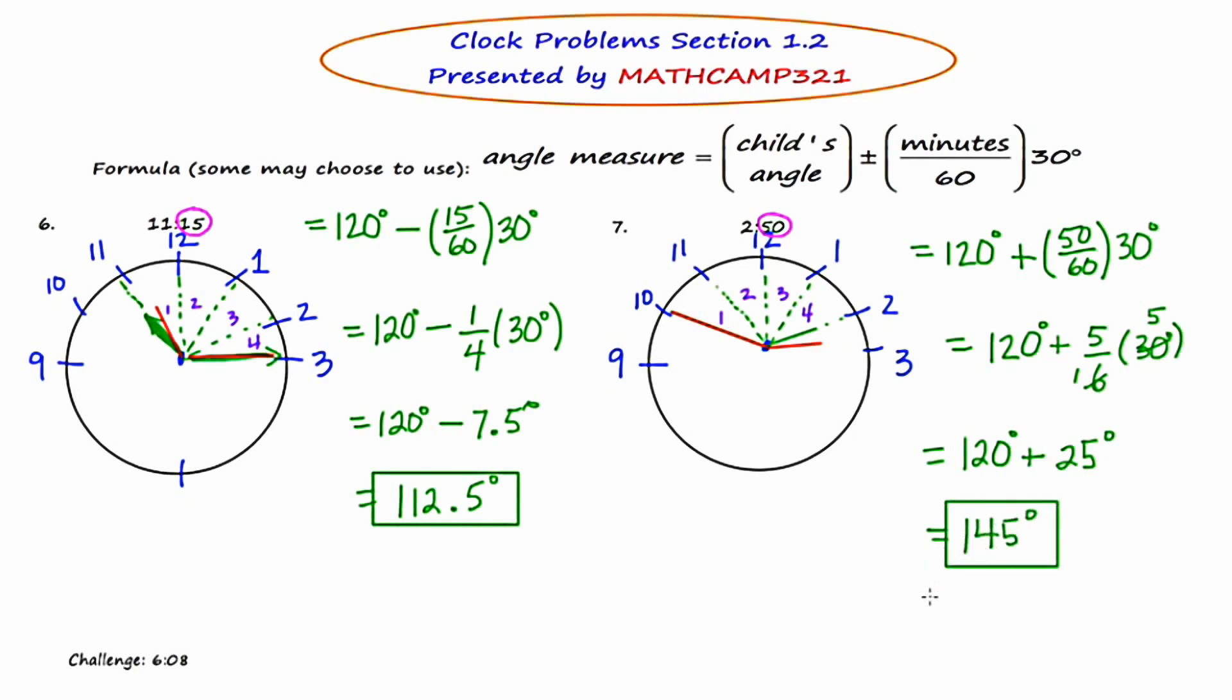So that's pretty much the level of difficulty that you're going to see in our book. If you're in Geometry Honors, there are a few C-level questions where the times are a little bit weird. As a challenge for everybody, if you look at the bottom left of the screen, I've put a little challenge there. And the challenge is to find the angle formed by the hands of a clock at 6:08.